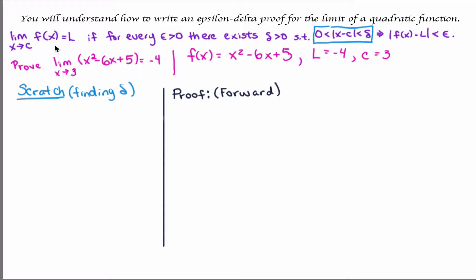Here's the definition of a limit. The limit of a function f, as x approaches some real number c, equals some real number l if, for every epsilon greater than 0, there exists delta greater than 0, such that the distance between x and c is between 0 and delta, implies that the distance between the function and l is less than epsilon.